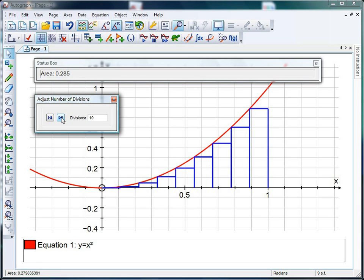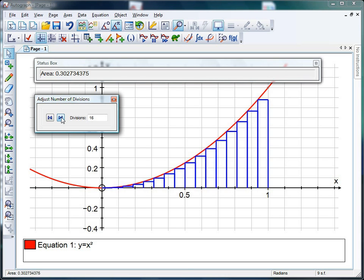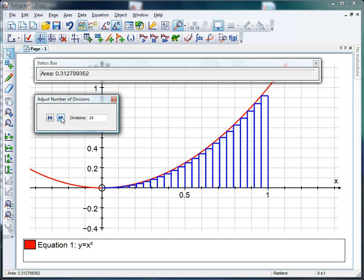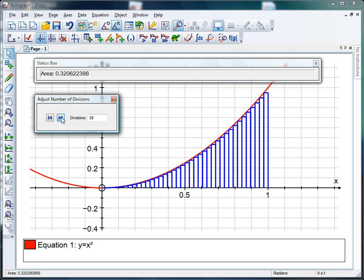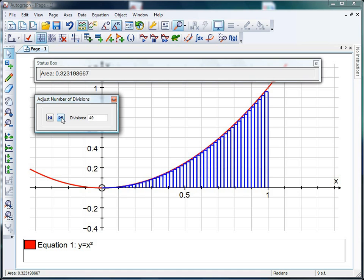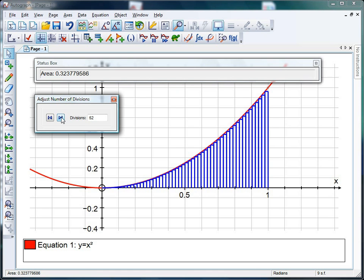If I click that, what we can do is dynamically change the number of divisions and ask the students to predict as we increase the divisions what's going to happen to the estimate for the area. Is it going up? Is it going down? Is it going to get more realistic, less accurate? As we increase it, we'll see that the area is increasing. Is it going to go on indefinitely increasing? Is it going to reach a limit? Why is it going to reach a limit? What limit is it going to reach?